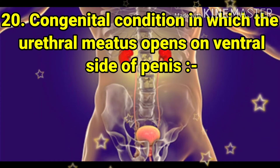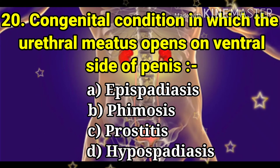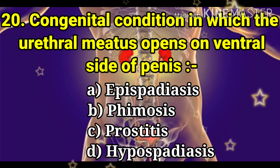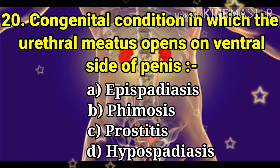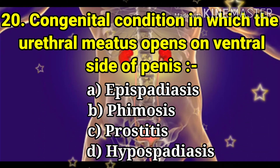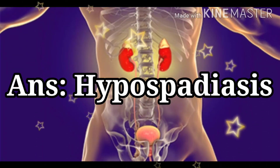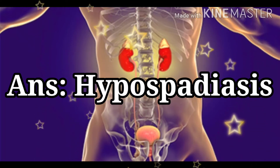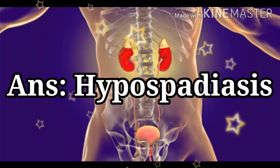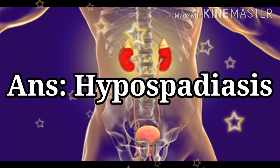Next question: the congenital condition in which the urethral meatus opens on the ventral side of the penis. The options are epispadias, phimosis, prostatitis, and hypospadias. The answer is hypospadias. In the case of epispadias, the urethral meatus opens on the dorsal side of the penis.